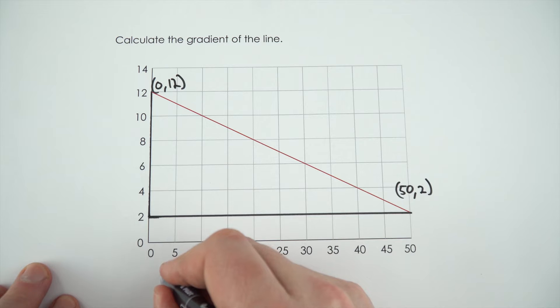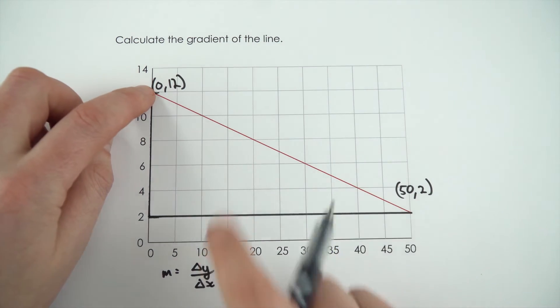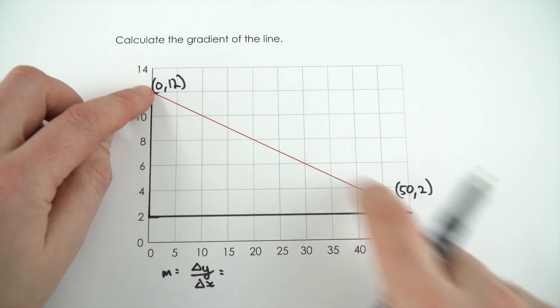So to work out the gradient, it's equal to the change in y divided by the change in x value. The change in y value, well it starts at 12 and then it goes down to 2, so it decreases by 10.